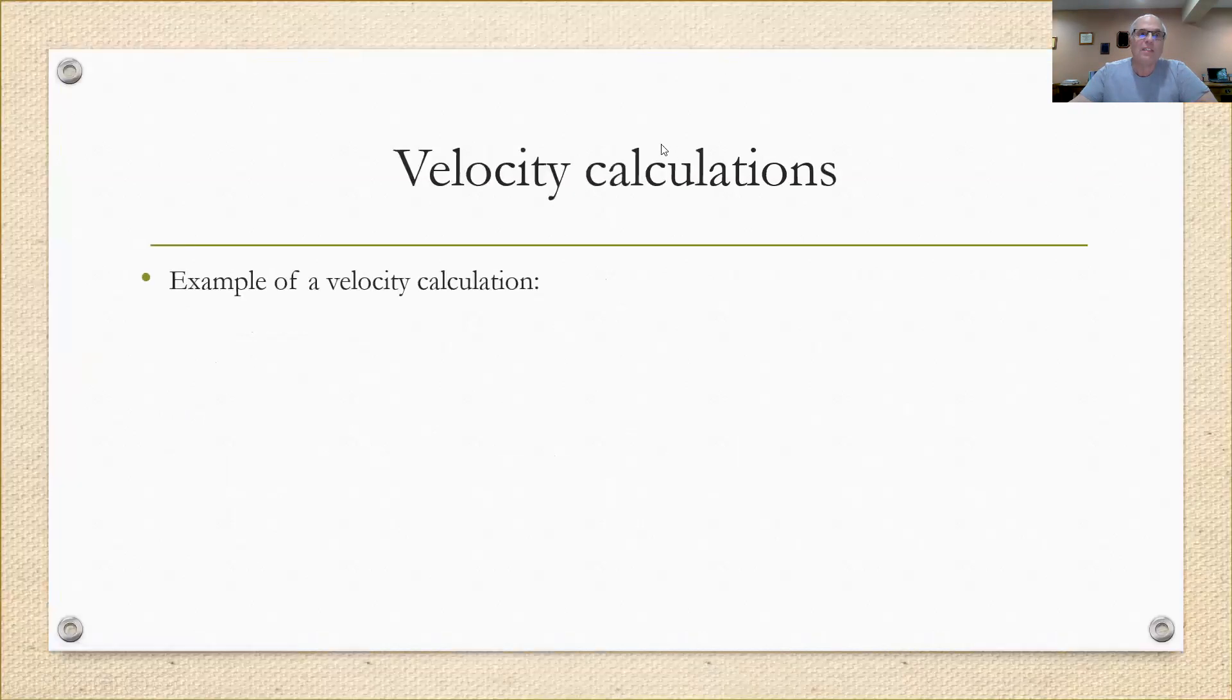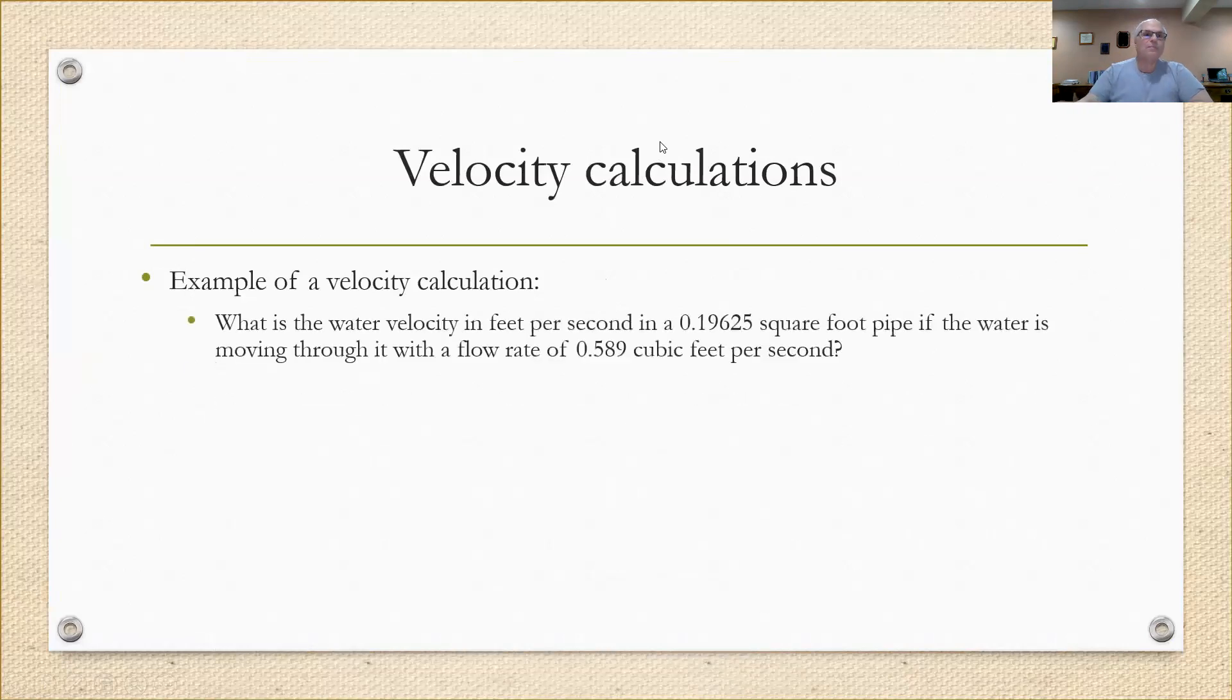Here's a velocity calculation example. What is the water velocity in feet per second in a pipe that has a square area of 0.19625 square feet? The water moving through it is moving at a flow rate of 0.589 cubic feet per second. If you want to work this out, pause the video now and do your math on a piece of paper, use a calculator, and then come back to see if you get the right answer.